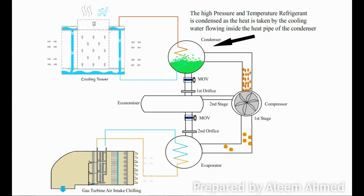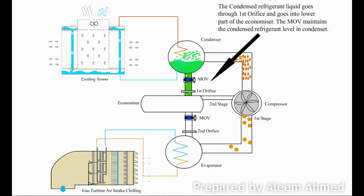The condensed refrigerant from the condenser goes through the first orifice to the lower part of the economizer. The condenser MOV maintains liquid refrigerant level in the condenser.